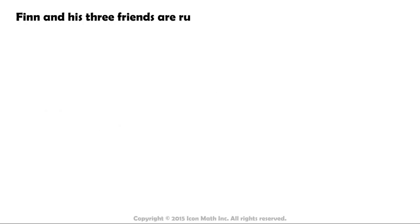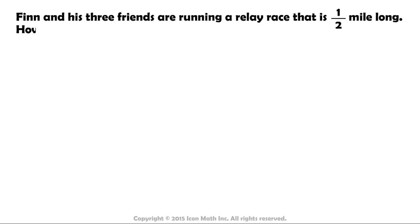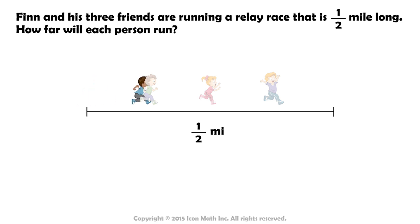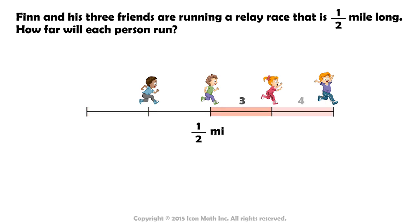Finn and his three friends are running a relay race that is one half of a mile long. How far will each person run? We know the total distance is one half of a mile. And since this is a relay race, Finn and his friends will run an equal part of the race. That means we need to break the total distance into four equal parts. So what expression represents this situation? One half divided by four.